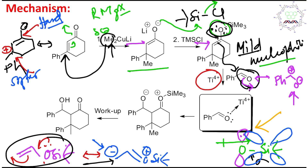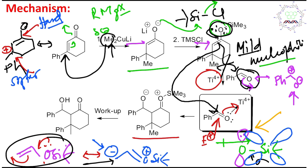After Lewis acid-base coordination with titanium(IV), the electrophilicity of the aldehyde carbon increases, so the silyl enol ether can now attack it — which was not possible before. The product opens up and remains coordinated to titanium(IV).